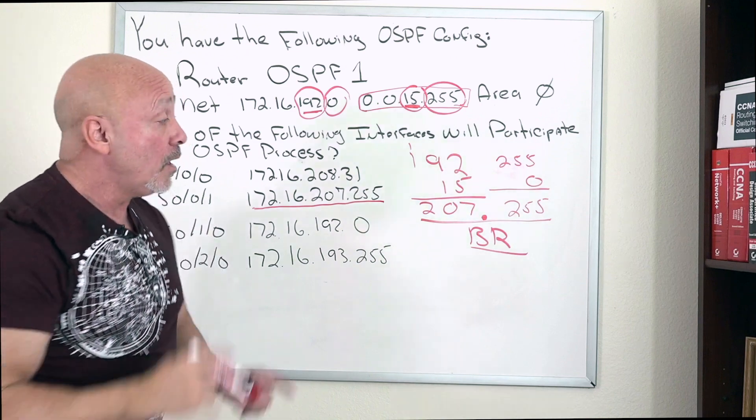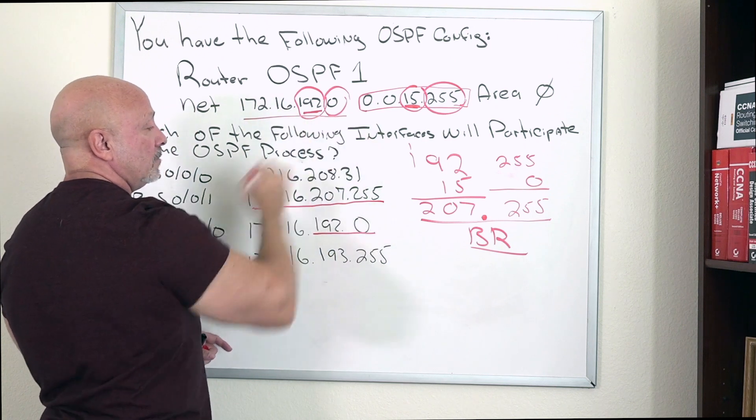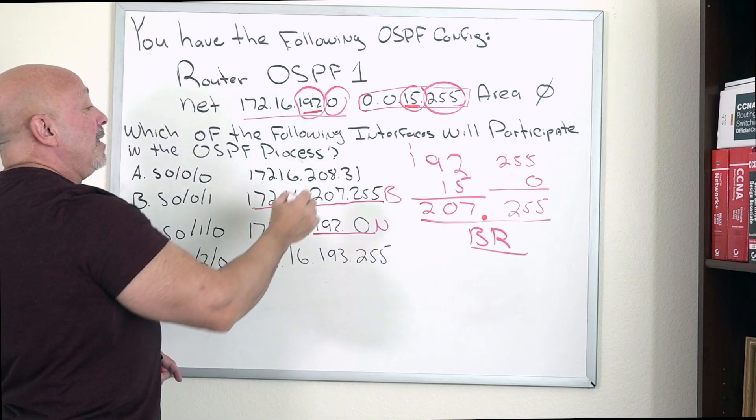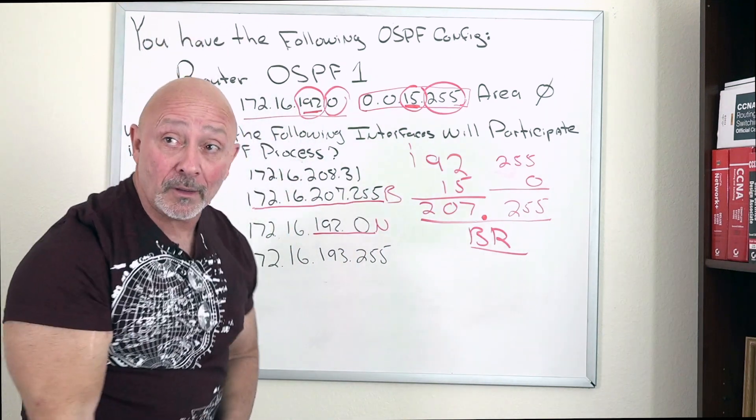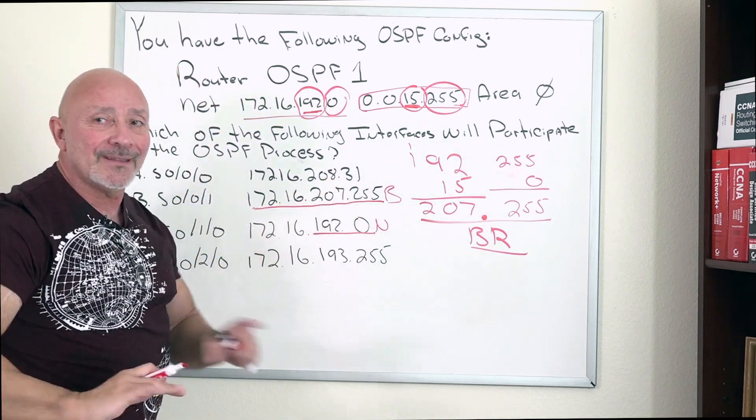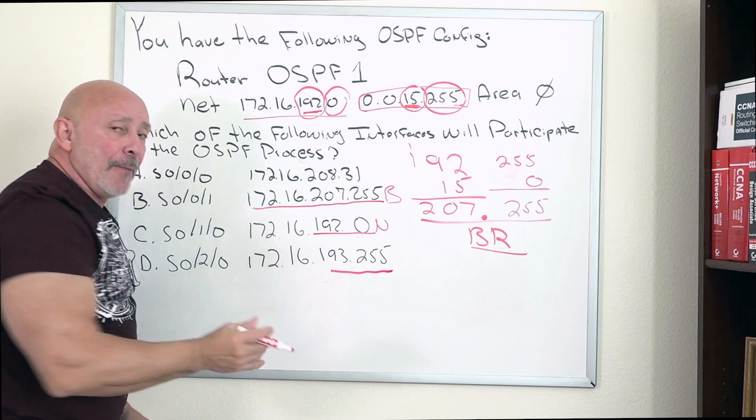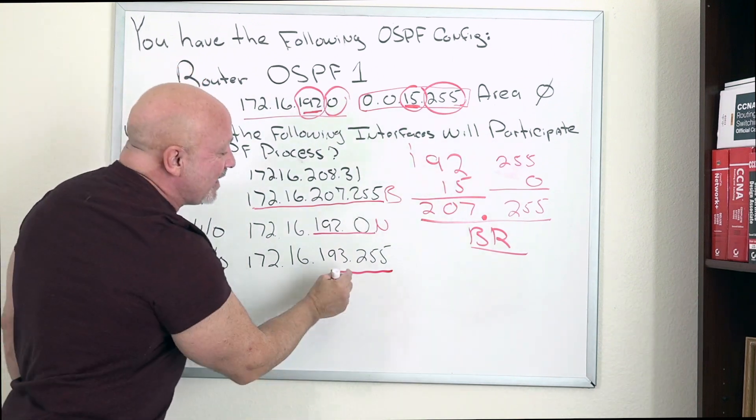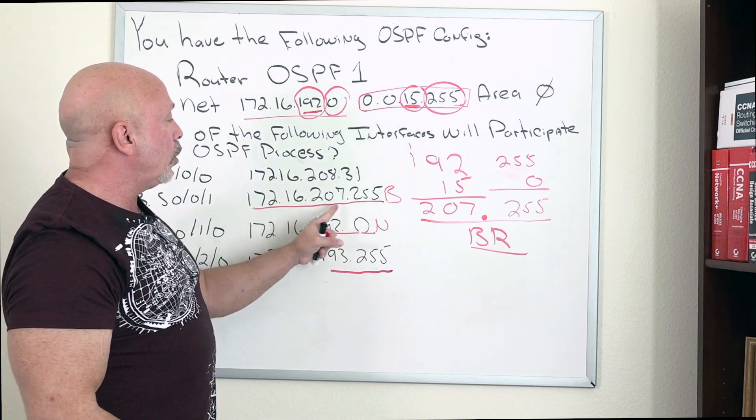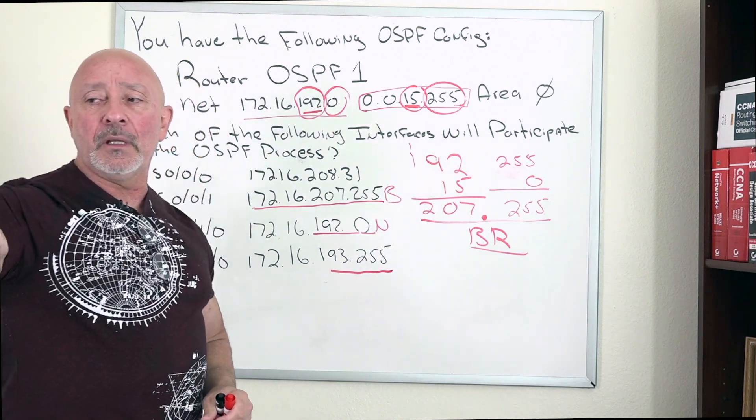207.255 is one of the answers, but that would be wrong because that is a broadcast address. Your range is from 192.0, which is your network, to 207.255. This is your network, this is your broadcast, this is your next network 208.0. So anything above 208 is not it. The last one I put deliberately because 193.255 is in the range between 192.0 to 207.255.